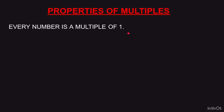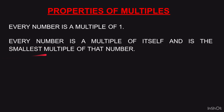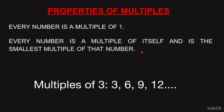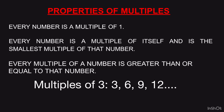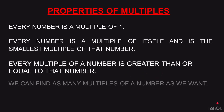Now let us look at the properties of multiples. Every number is a multiple of 1. Every number is a multiple of itself and is the smallest multiple of that number — for example, 3 is the smallest multiple of 3. Every multiple of a number is greater than or equal to that number. So 3, 6, 9, 12 — the number 3 is the smallest, and all other multiples are greater. We can find as many multiples of a number as we want; there is no end to it.